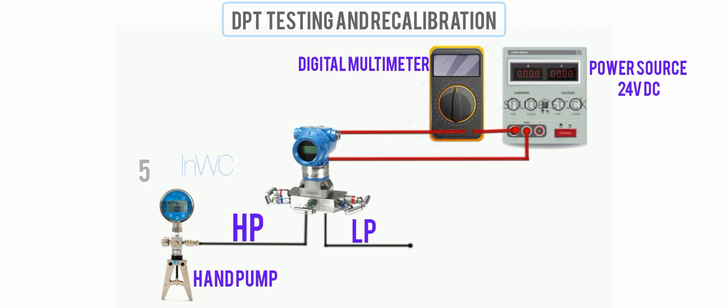We begin by applying the desired pressure input values from the calibration table to the high input on the flow transmitter and record the output current measured for each input value. If the output currents measured are outside of the acceptable ranges as established by your company, then the transmitter must be recalibrated using the zero and span adjustments.